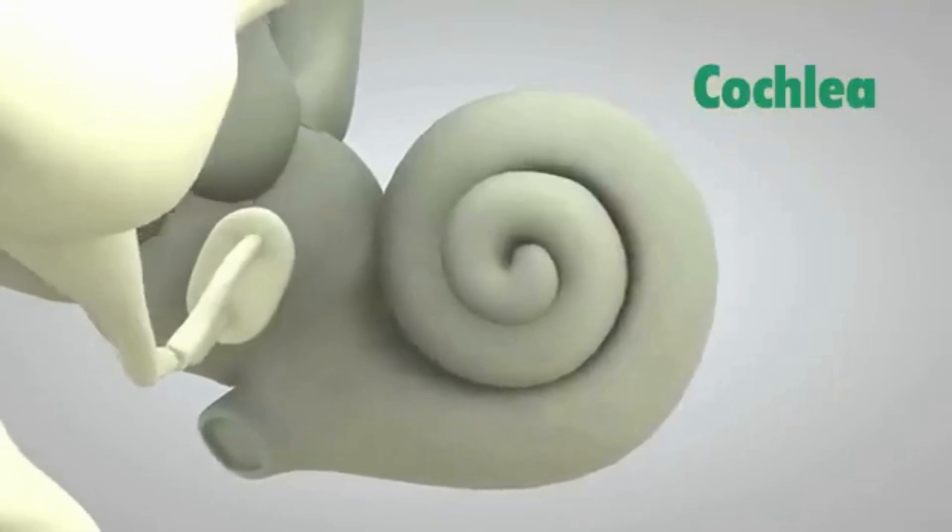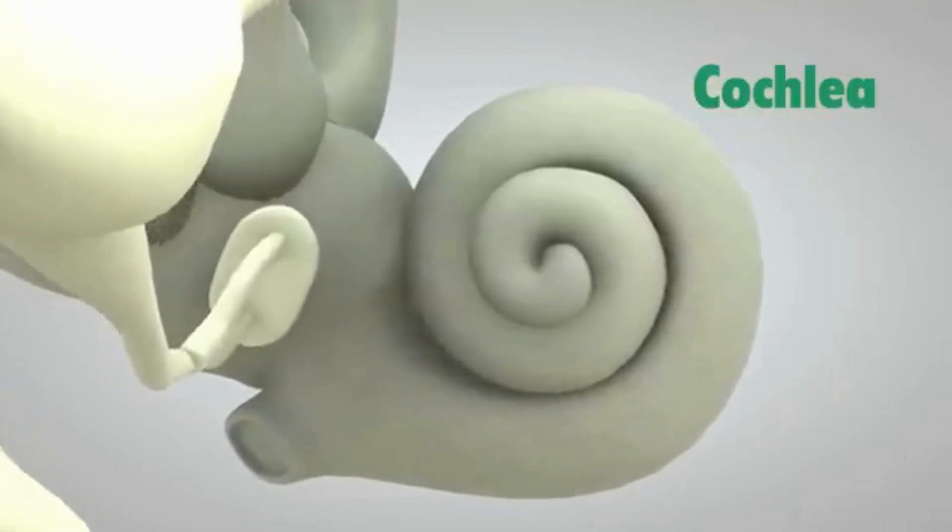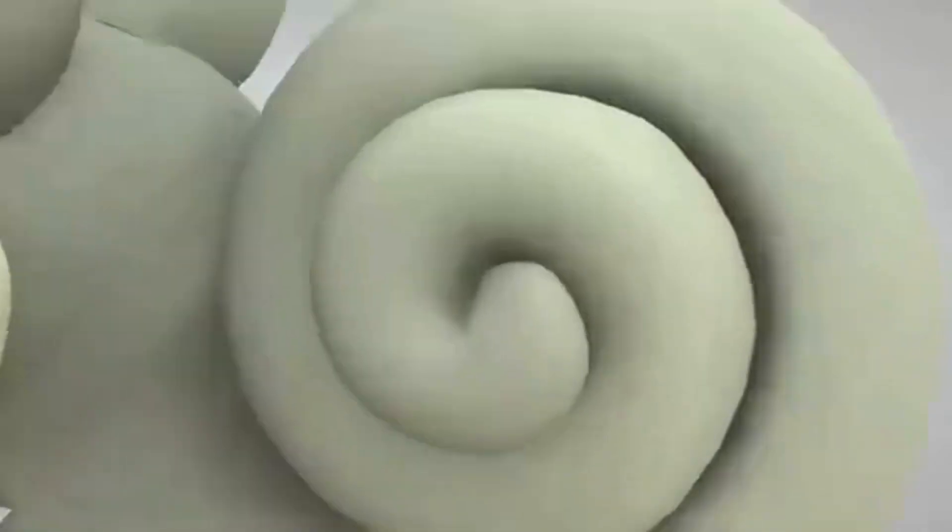The cochlea is shaped like a snail and is the size of a garden pea. It is filled with fluid, and the sound vibrations make this fluid ripple, which creates waves.